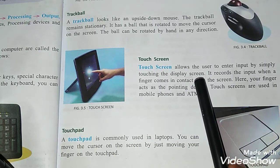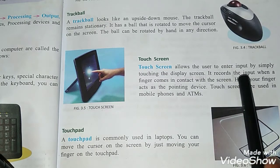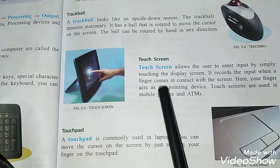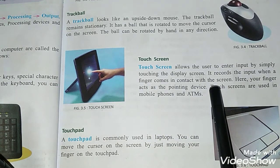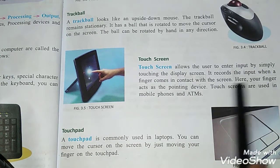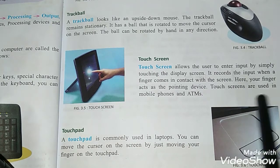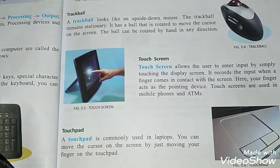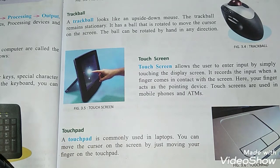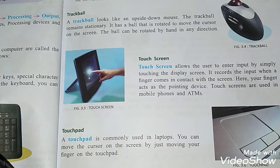It records the input when your finger comes in contact with the screen. Here your finger acts as a pointing device. Touchscreens are used in mobile phones and ATMs. A touchscreen is a touch-sensitive display device. Touchscreens that require multiple points of contact at the same time are known as multi-touch.